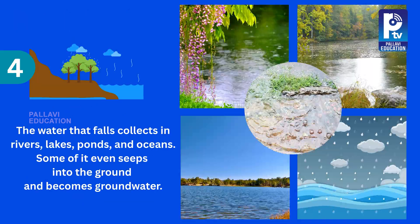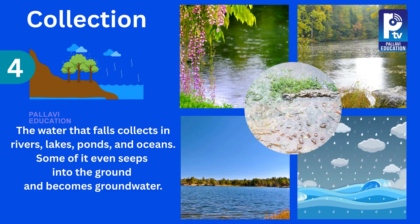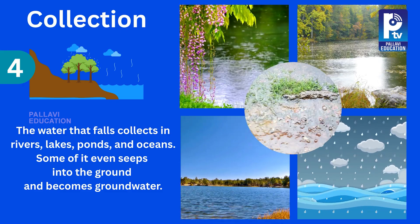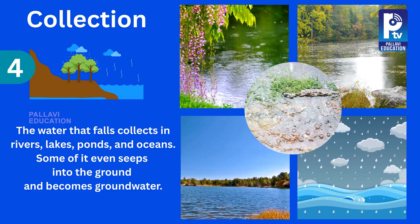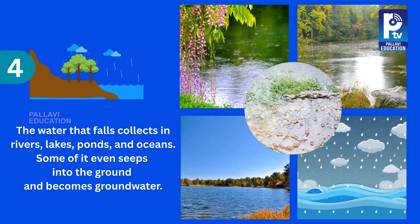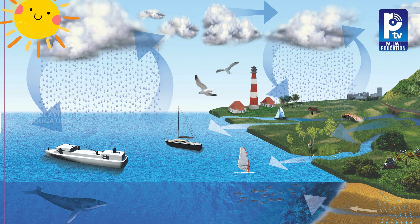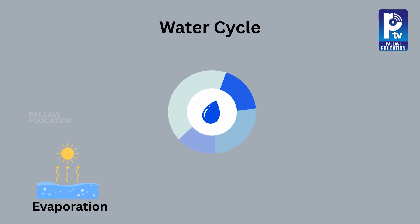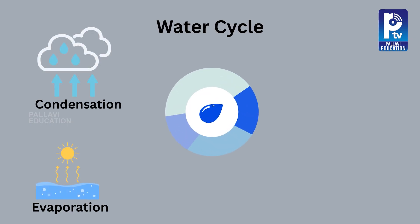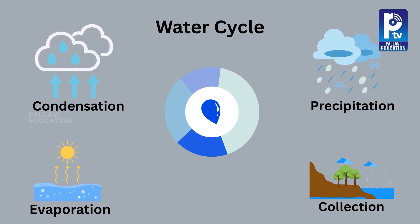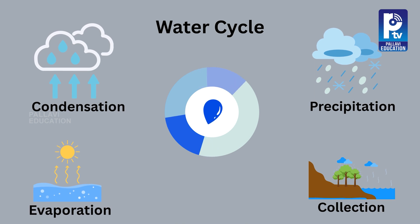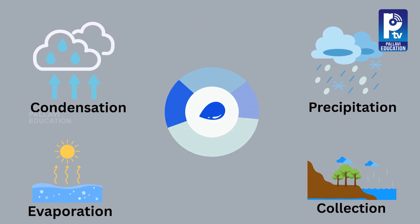The fourth step is collection. The water that falls collects in rivers, lakes, ponds, and oceans. Some of it even seeps into the ground and becomes groundwater. And once again, with the help of the sun, the water evaporates, and the cycle starts all over again. Evaporation, condensation, precipitation, and collection — these four steps keep the water cycle moving, balancing Earth's water and supporting all forms of life.